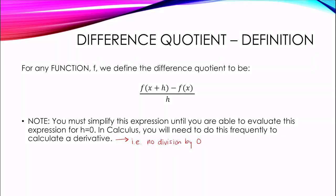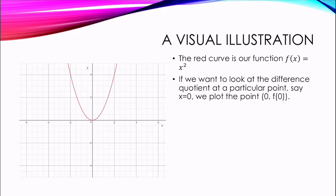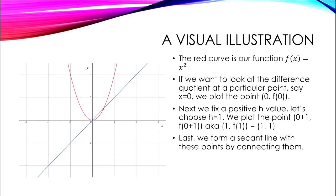Let's take a look. Let's say our function is f of x equals x squared. The red curve is our function f. If we want to look at the difference quotient at a particular point, say x equals zero, we plot the point zero, f of zero. Next, we fix a positive h value. Let's choose h equals one. We plot the point zero plus one, f of zero plus one, aka one, f of one. For this function, that point is one, one. Last, we form a secant line with these two points by connecting them.